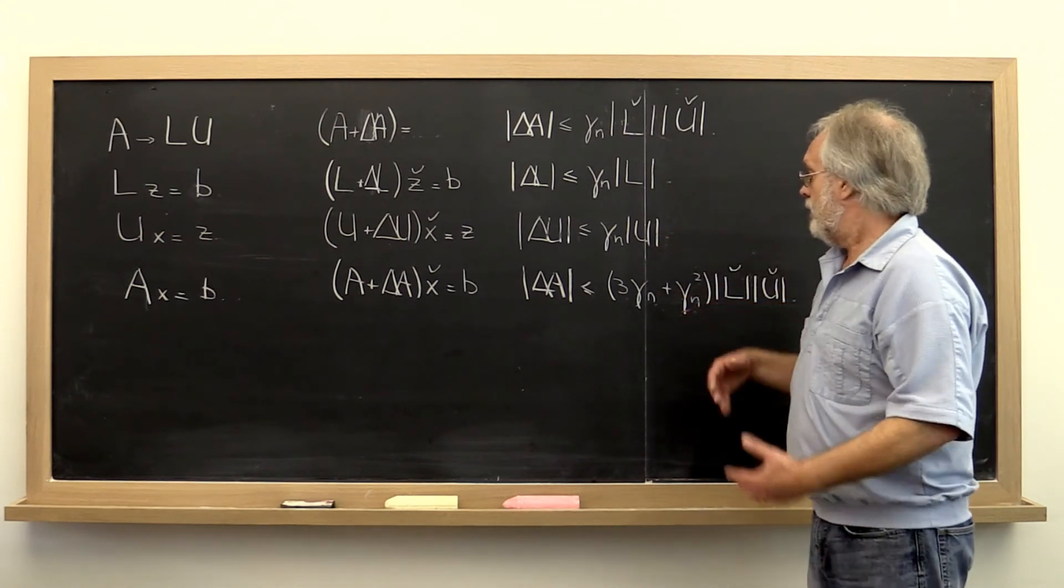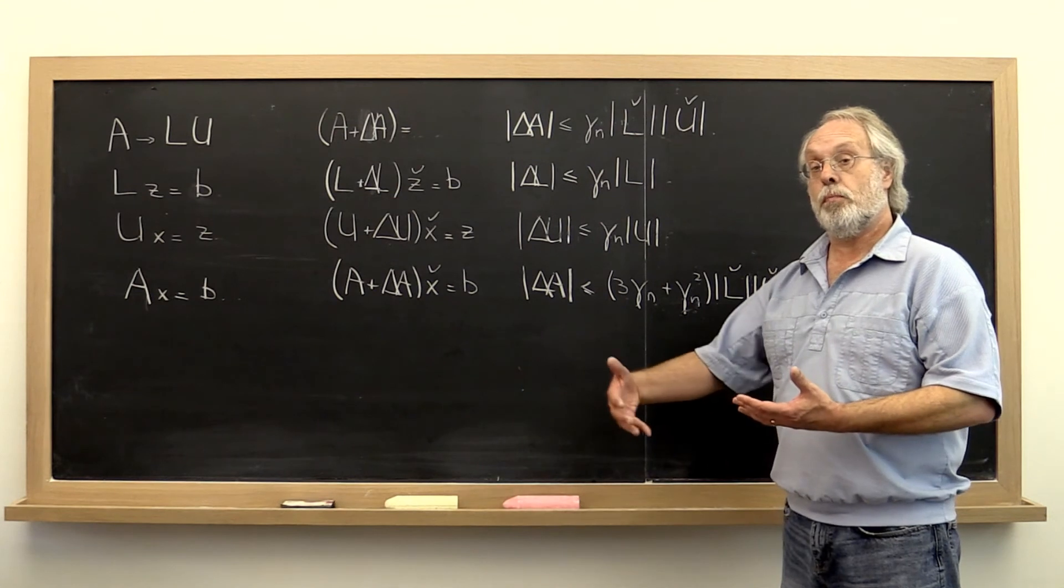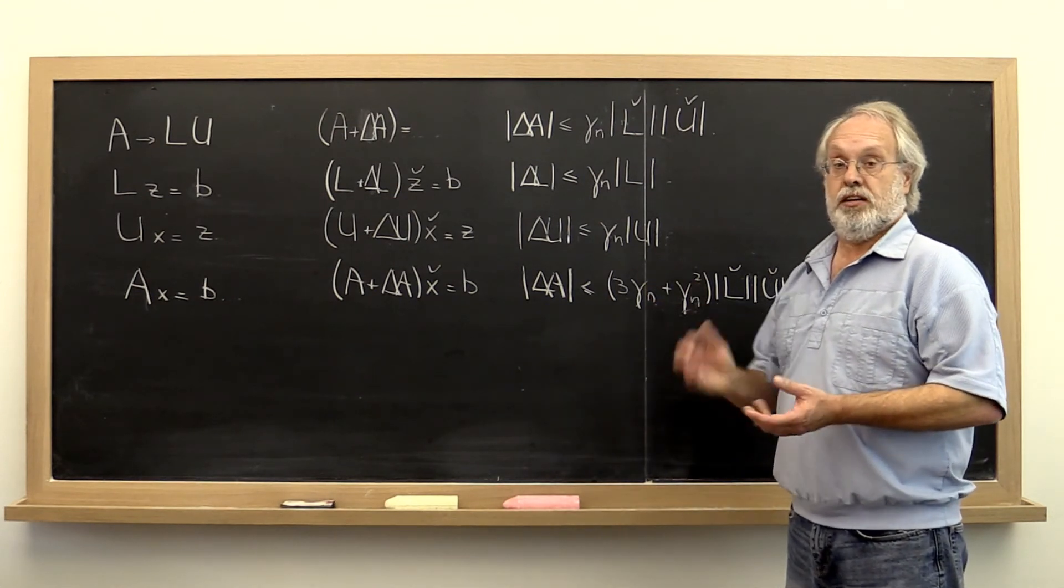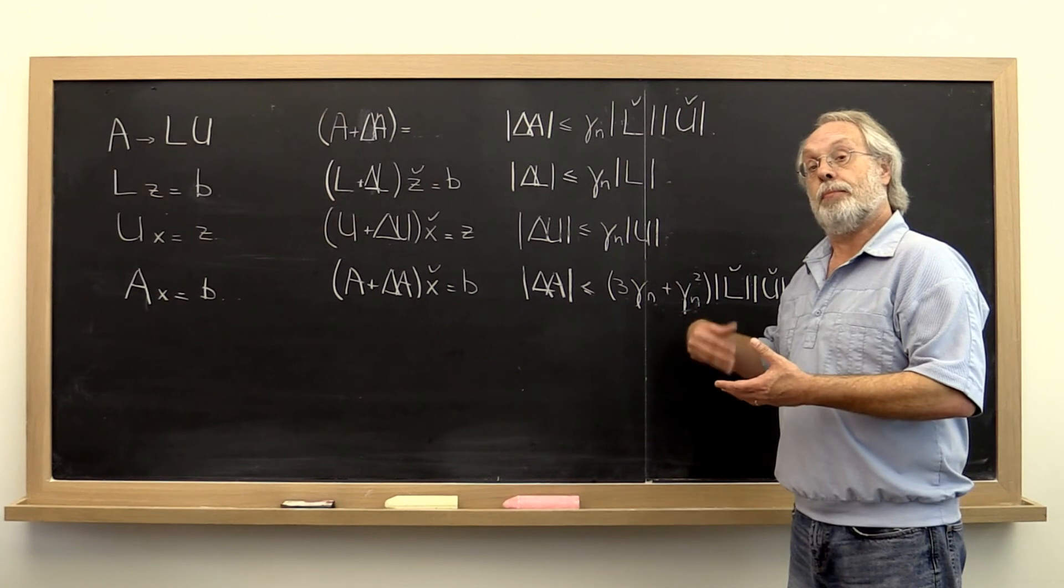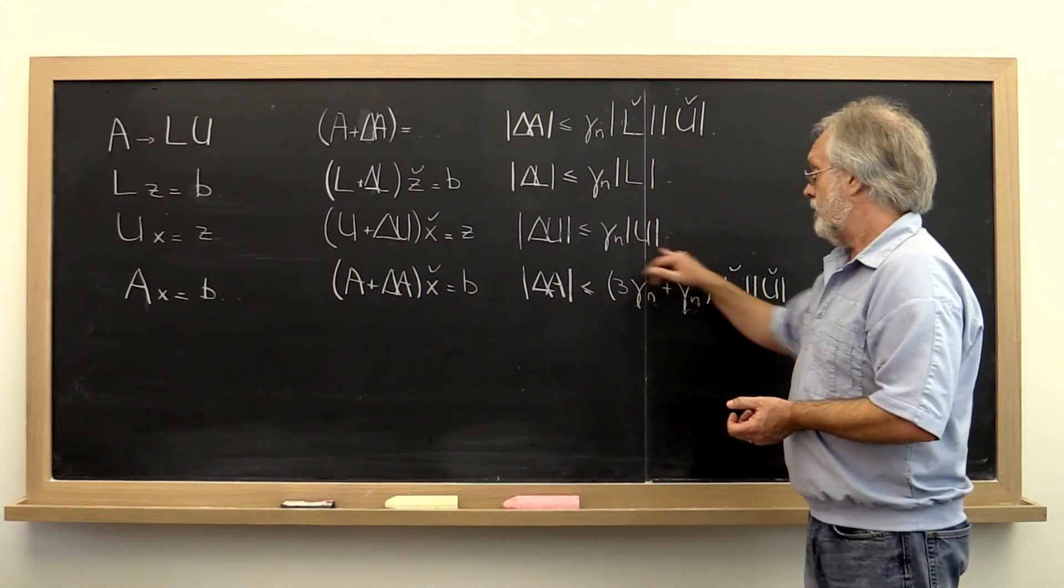And then if you make the constant in front of the gamma n squared a little bit more pessimistic, then you can bring the order n gamma n cubed term into that term and you end up with something like that.